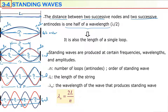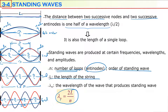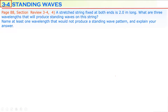Standing waves form at specific wavelengths and specific frequencies. We can calculate which wavelengths produce a standing wave using the equation λₙ = 2L/n, where n is the number of loops — equal to the order of the standing wave (first, second, third, etc.) — and L is the length of the string from one end to the other. λₙ represents the wavelength of the wave that produces a standing wave of order n on that string.